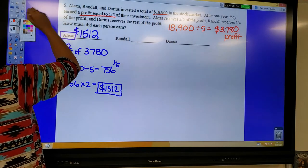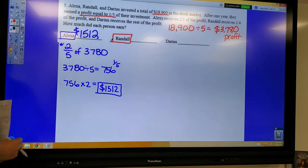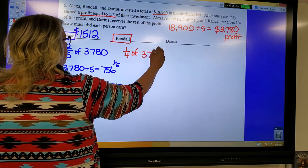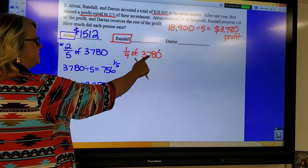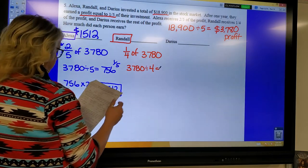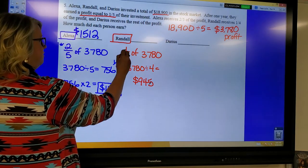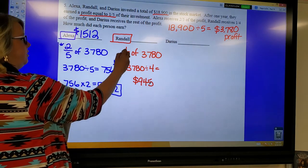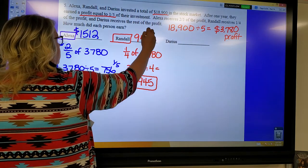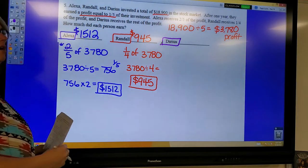Randall, do Randall in red. Randall receives one-fourth of the profit. So one-fourth of the profit, which is $3,780. So to take one-fourth of this number, I'm just going to take this number divided by four. $3,780 divided by four gives me $945. Since we're only taking one-fourth, over here we have two. Here we only have one. So I don't have to multiply it by anything. This is just my answer for Randall. All right. Lastly, Darius.